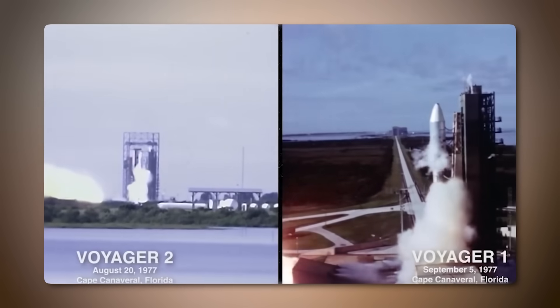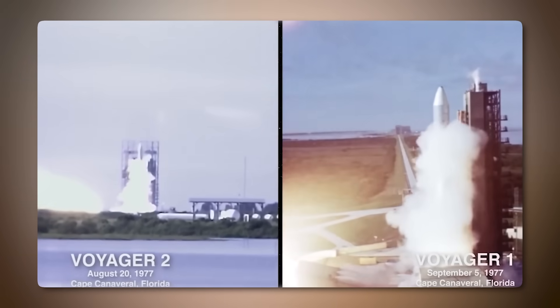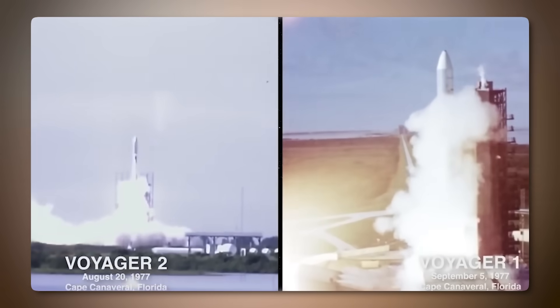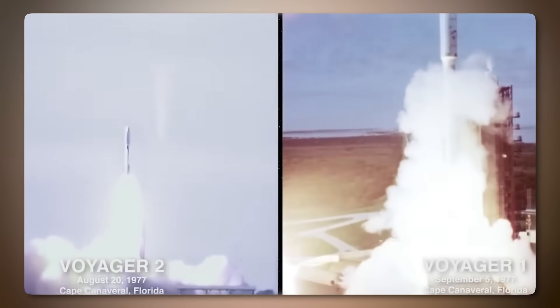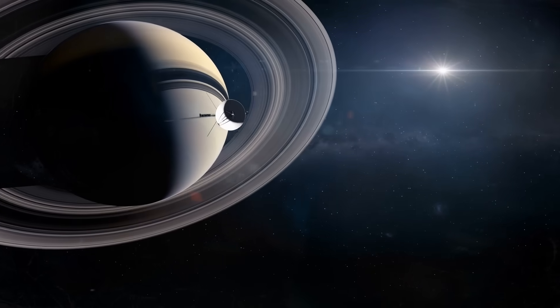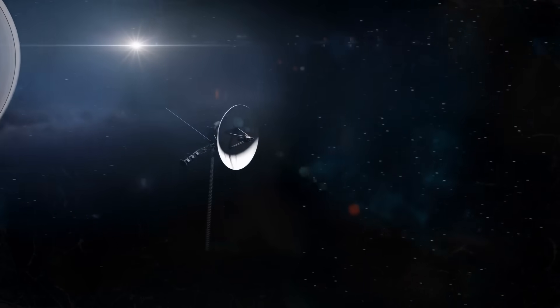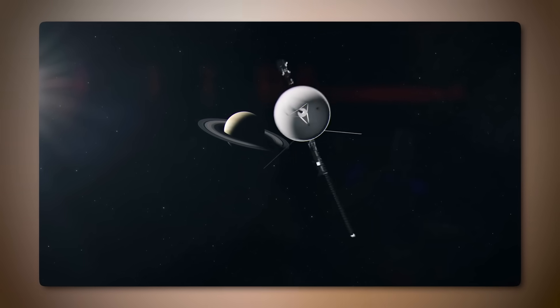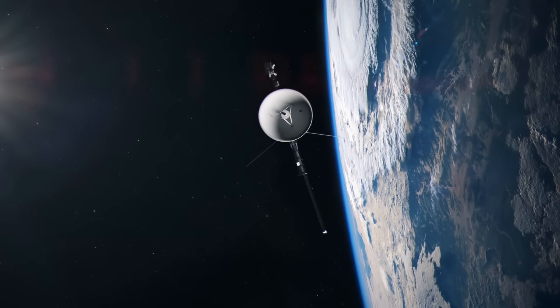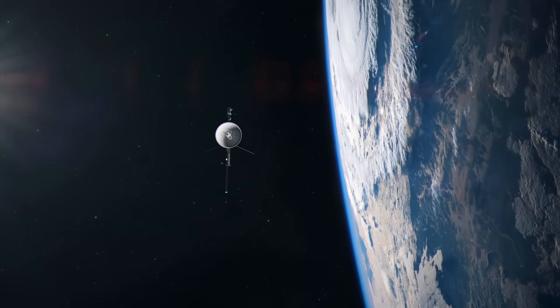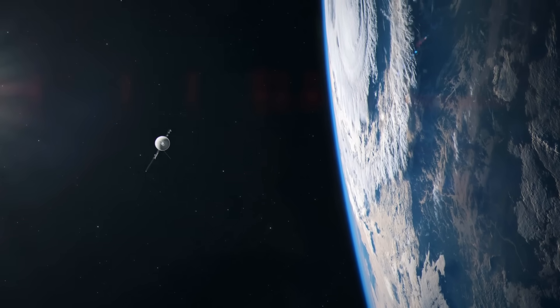Launched in 1977, the Voyager mission consists of two twin spacecraft, Voyager 1 and Voyager 2, designed to explore the outer planets of our solar system and eventually enter interstellar space. Originally intended to perform a grand tour of the outer planets, both probes exceeded their initial goals by journeying past their intended paths and continuing on an interstellar trajectory.